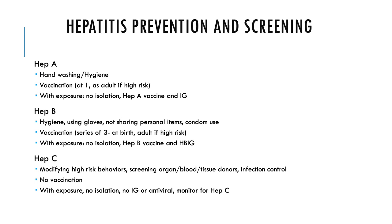For hepatitis C, we encourage patients to modify high-risk behaviors. Organ, blood, and tissue donors are screened to prevent transmission. Good infection control, not sharing personal items, and condom use are key. There's no vaccine for hepatitis C, so if someone is exposed, they don't need isolation. For acute exposure to hepatitis C, no immunoglobulin or antivirals are typically given — they're just monitored to see if hepatitis C develops, if it becomes chronic, and to track liver function.